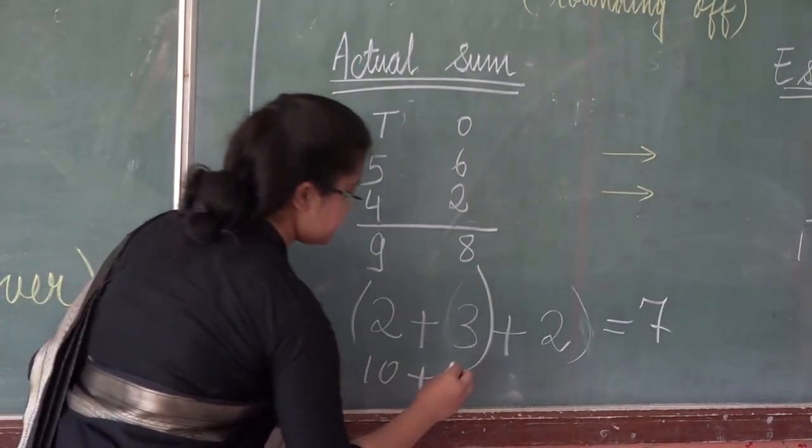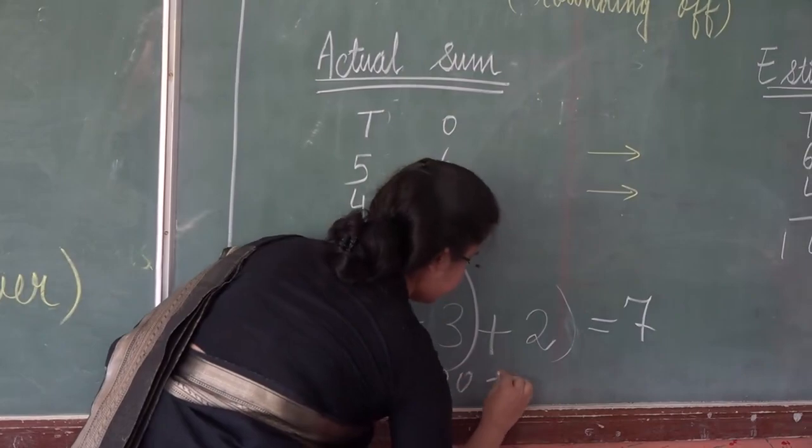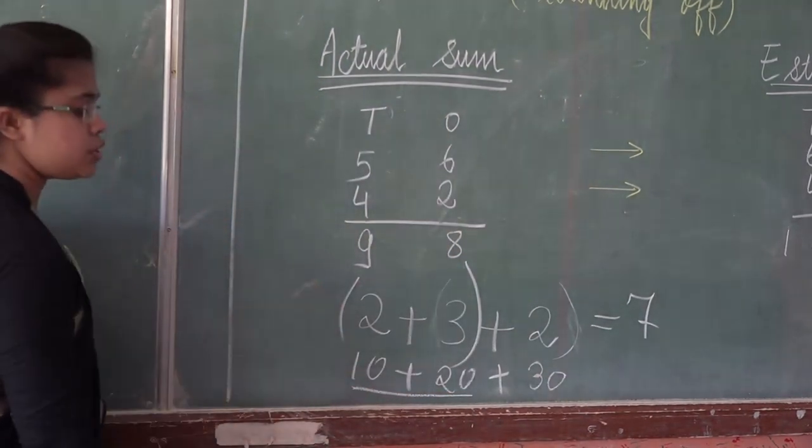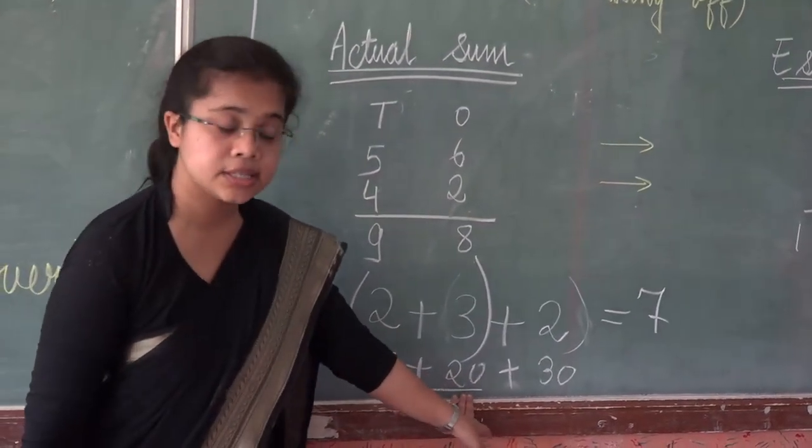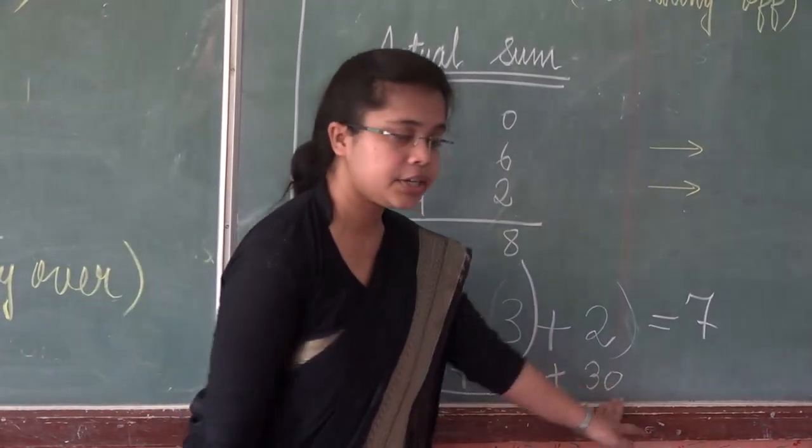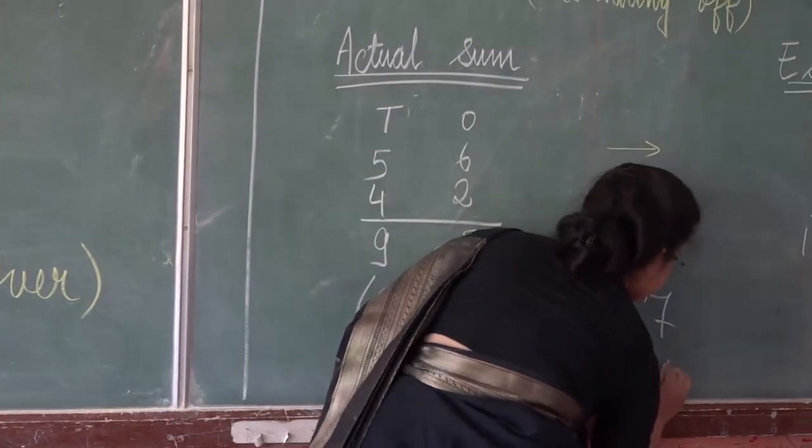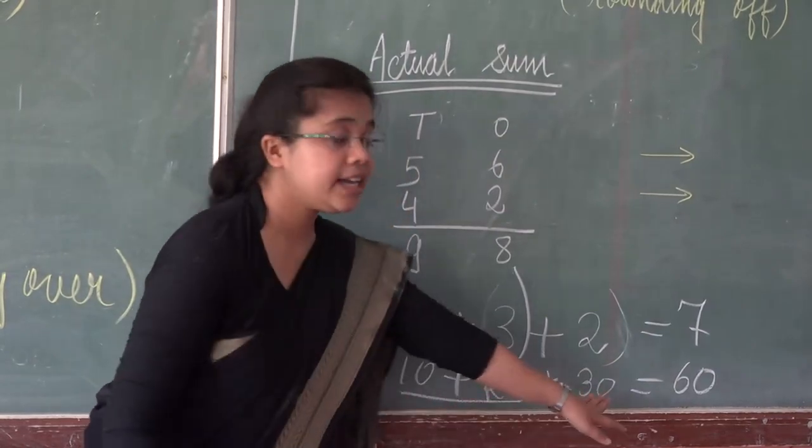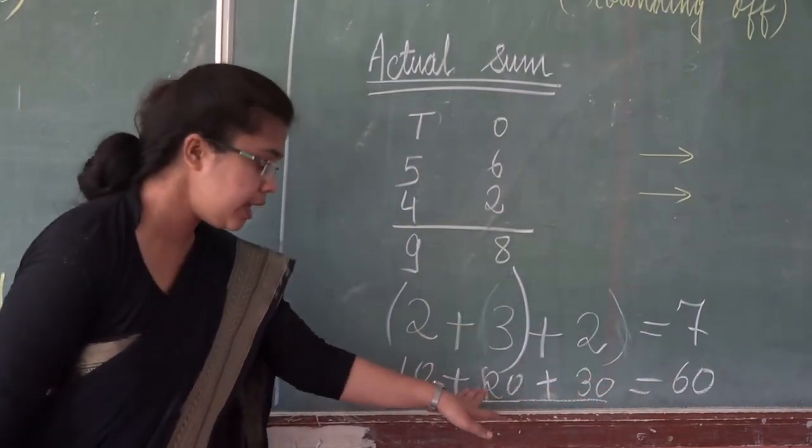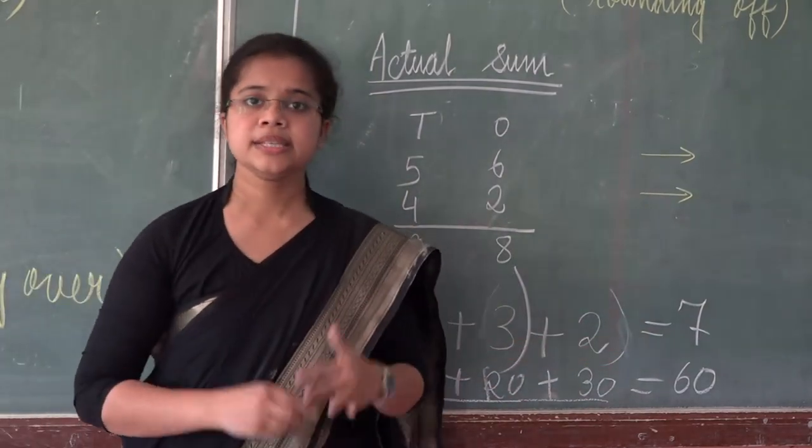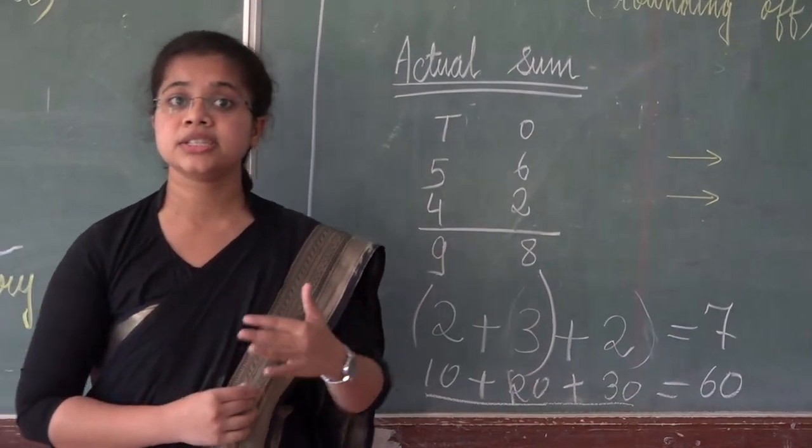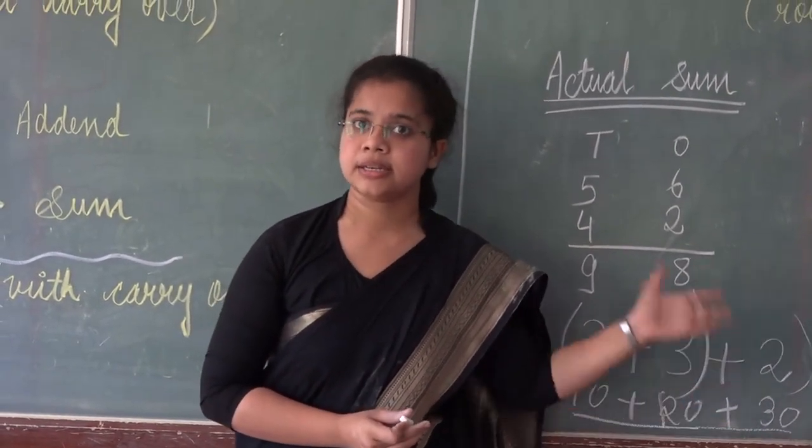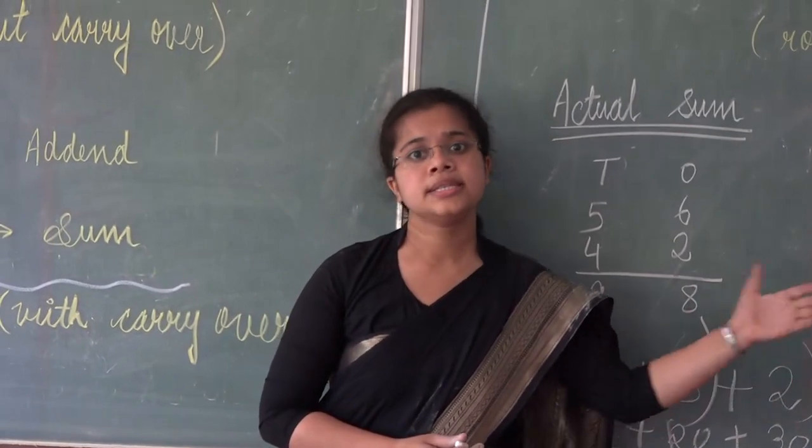Let us take another example. 10 plus 20 plus 30. Now first of all if we take these two numbers, 10 plus 20 is 30, then if we add 30 to it we will get 60. 20 plus 10 plus 30 is 60. It means that even if we change the group of the numbers, then also we will get the same answer.